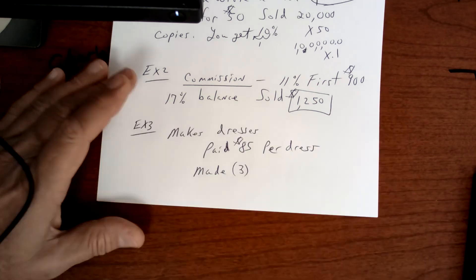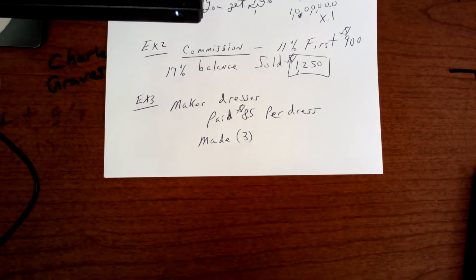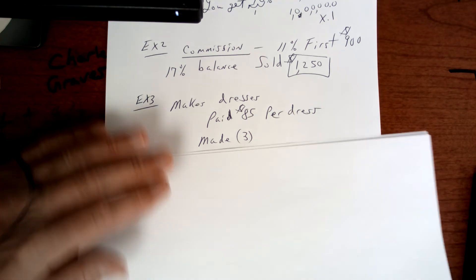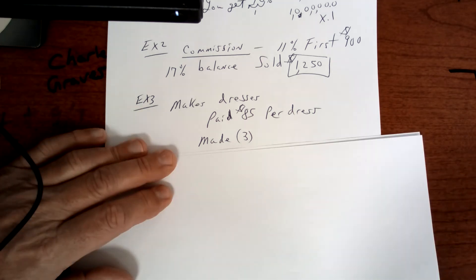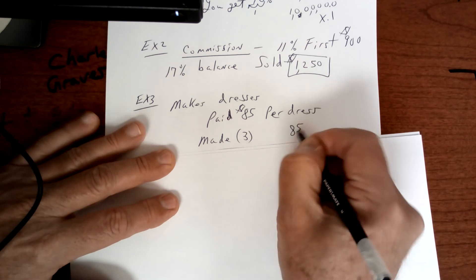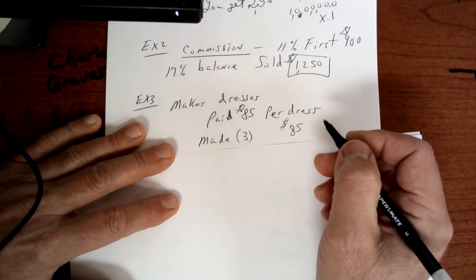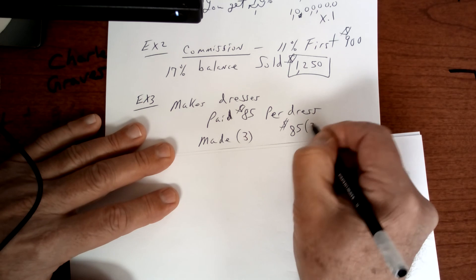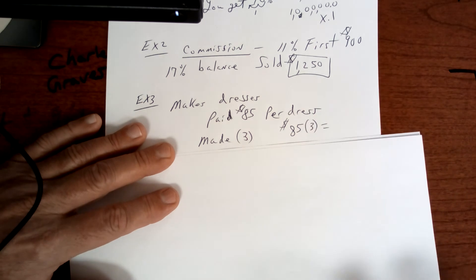Let's go on. Number three. Copy this down. You make dresses. Some of you make dresses. Let's take a look here. You made three of them. So all it is is $85, which is what you get paid per dress times three. So you just multiply that out. It's really pretty straightforward. It's not a hard chapter here.